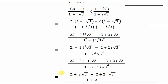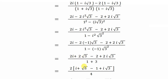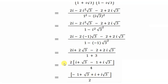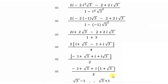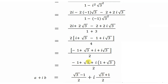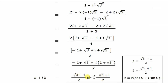We can take 2 as common from all numerator terms, giving 2(i√3 − 1 + i√3 + i) / 4. Simplifying, 2/4 = 1/2. Separating real and imaginary parts: the real part is (√3 − 1)/2 and the imaginary part is i(√3 + 1)/2. This is now in the standard form a + ib.